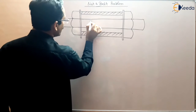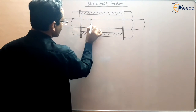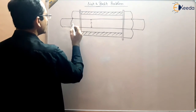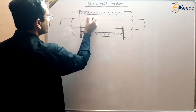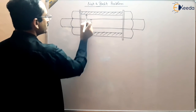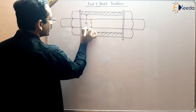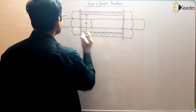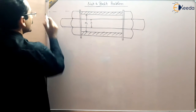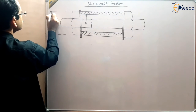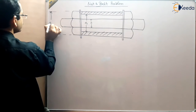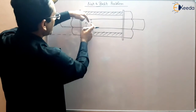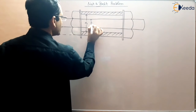We are given the diameter of the bolt — suppose D. The inner diameter of the tube must be given — suppose Di, where Di is the inner diameter of the tube. And Do is the outer diameter of the tube. So, Do is the outer diameter, Di is the inner diameter, and D is the diameter of the bolt.